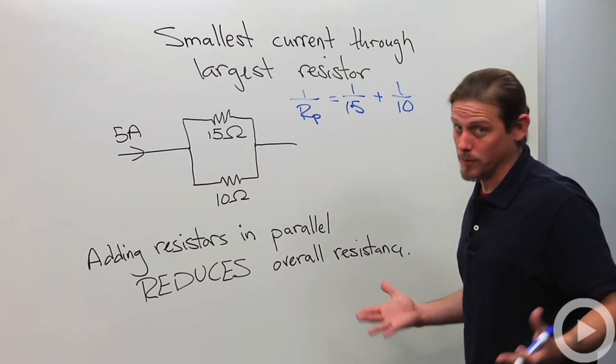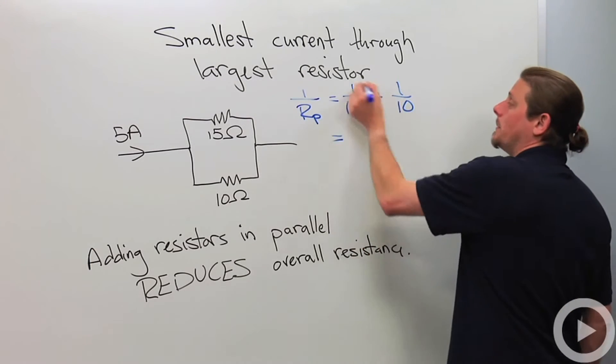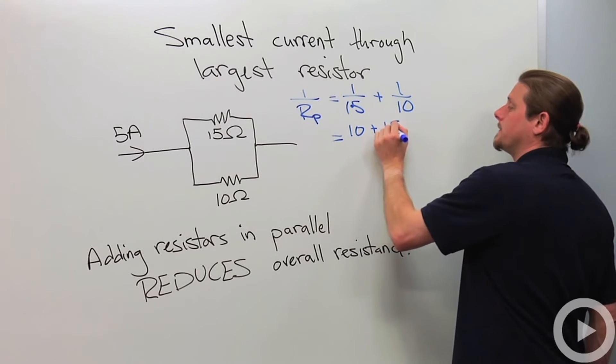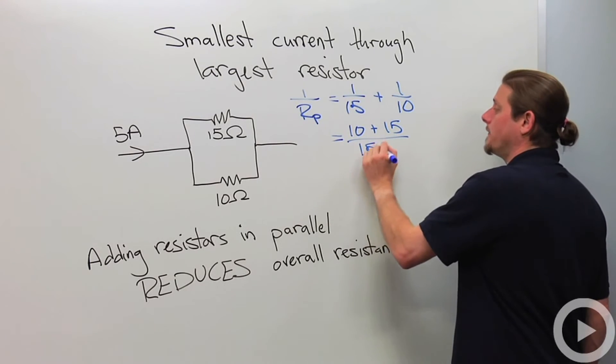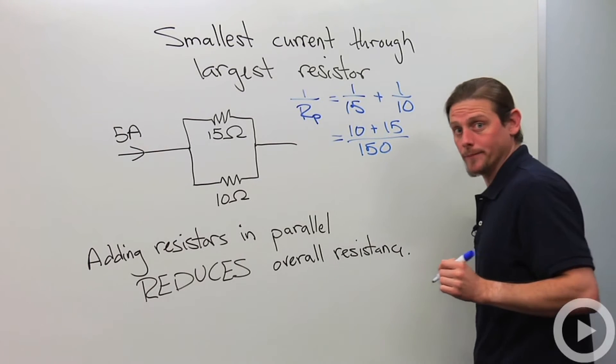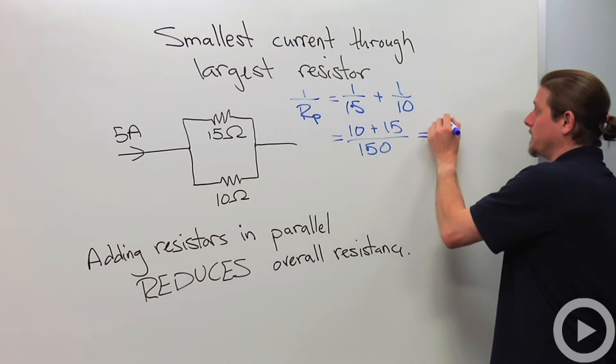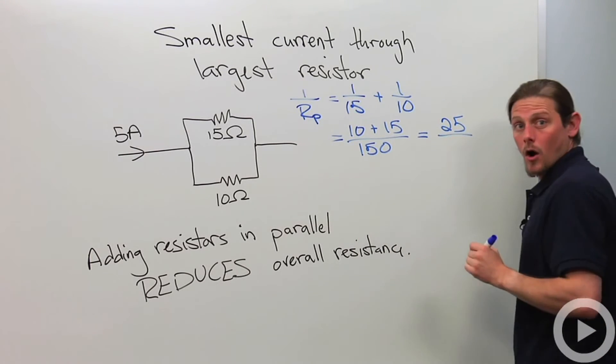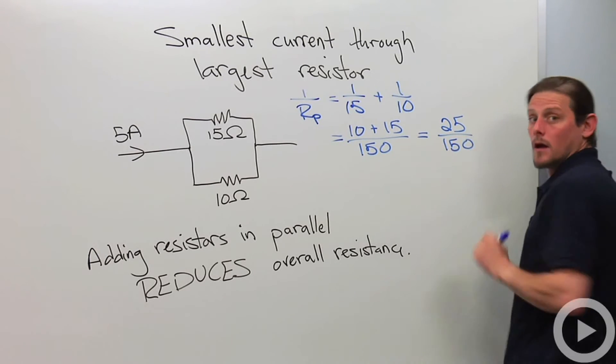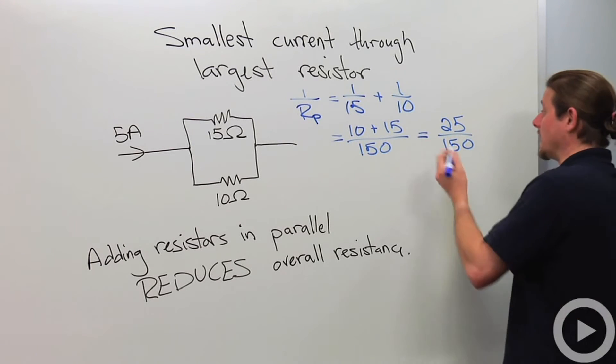it's like middle school. We've got to cross multiply. So it'll be 10 plus 15 over 150.